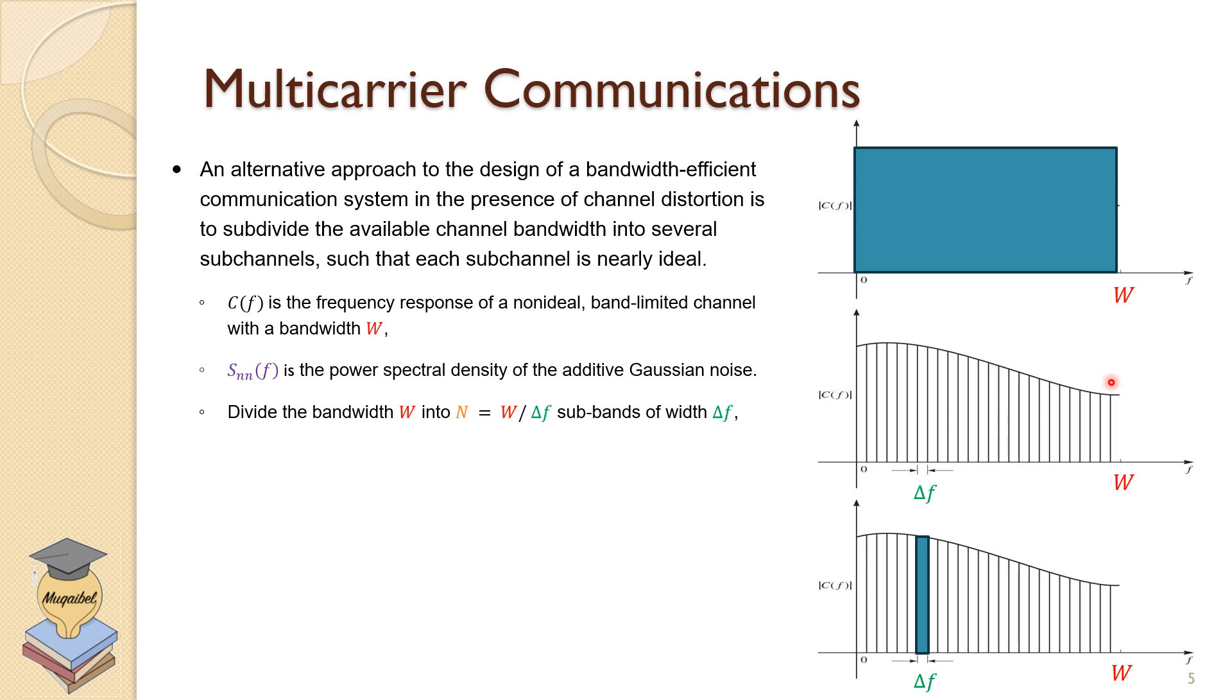But we can also have the phase. So we can have amplitude distortion or phase distortion. An alternative way of covering the entire bandwidth with one signal, what we can do, we can divide the spectrum into smaller bands. And those bands now will almost look flat, which means we have less variation within the given bandwidth. An alternative approach to the design of the bandwidth efficient communication system in the presence of channel distortion is to subdivide the available channel bandwidth into several sub-channels. CF is the response of the channel.